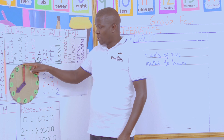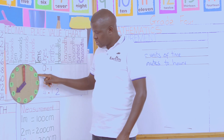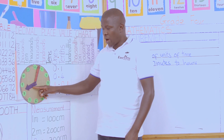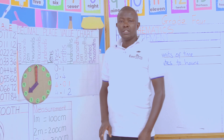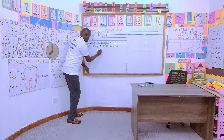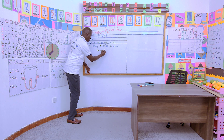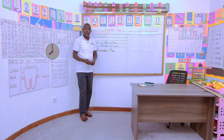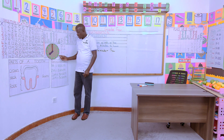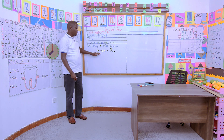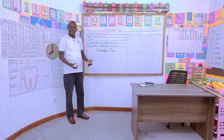When the minute hand moves all the way around, the hour hand will also move one full hour. So 60 minutes are equivalent to one hour.